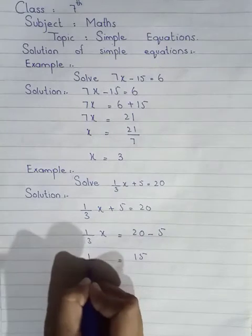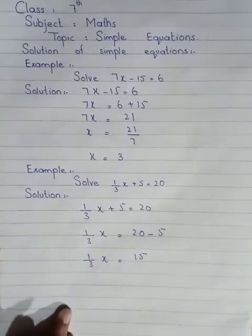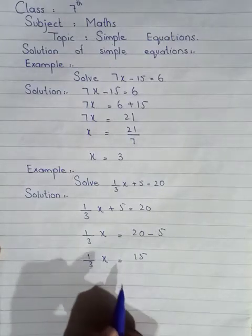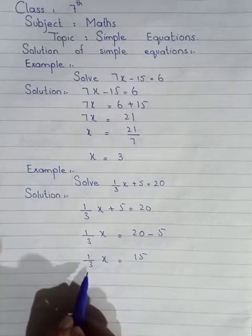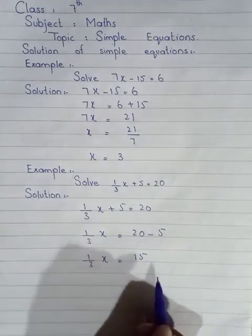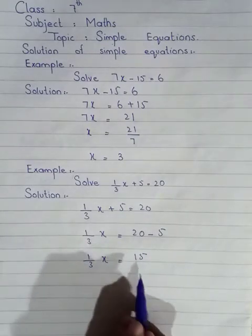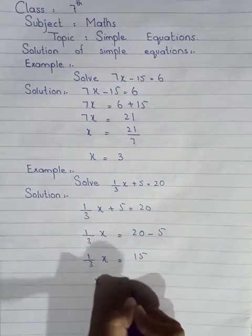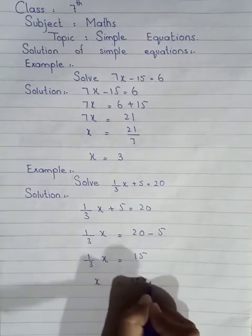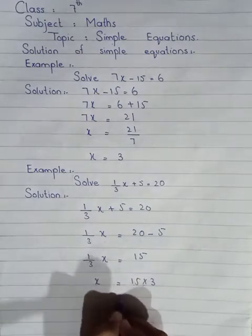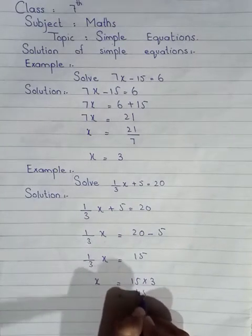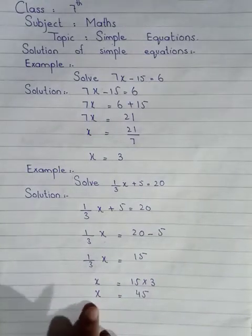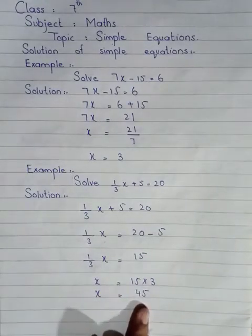And here I write 1 by 3 x. Now, we have to separate x. According to the third axiom, the 3 which is dividing here — when we take it to the other side, it will become opposite, meaning 3 will multiply with 15. So, x equals 15 multiplied by 3. The answer becomes 45. So, the value of x we have got is 45.